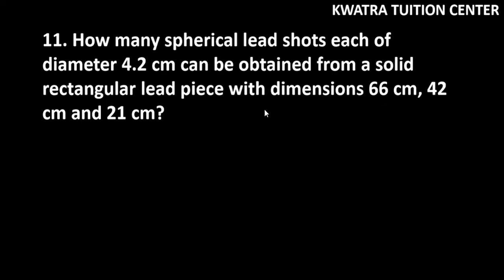We have a rectangular lead piece with these dimensions. It is a cuboid shape, and we need to find how many lead shots we can get. The cuboid has dimensions: L is 66 cm, breadth is 42 cm, and height is 21 cm.